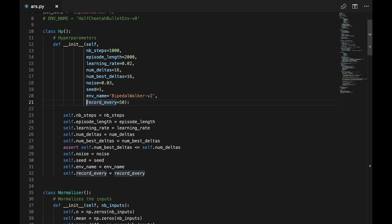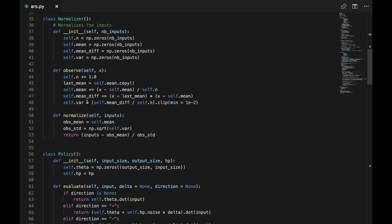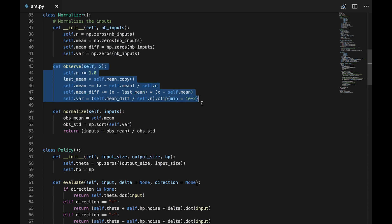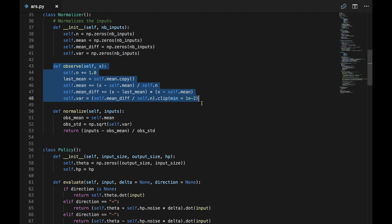Next, we'll move on to the normalizer class. This uses a very standard method to squeeze the inputs from our robot sensors between 0 and 1 which helps our policy converge. The init function simply creates empty arrays the size of our input space. The observed function takes an array of inputs, the sensors of our robot, and computes a running average as well as the variance. We clip the variance slightly above 0 to avoid division by 0.